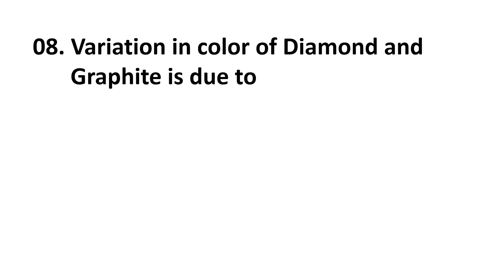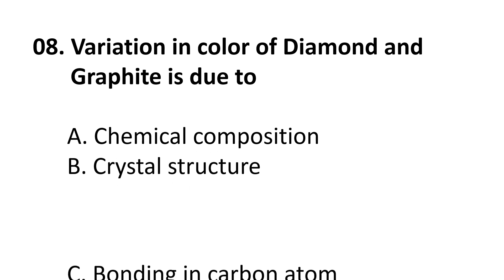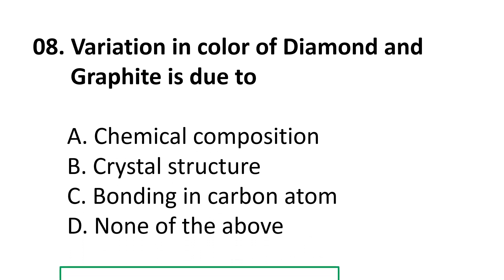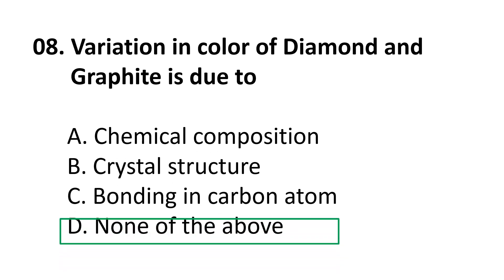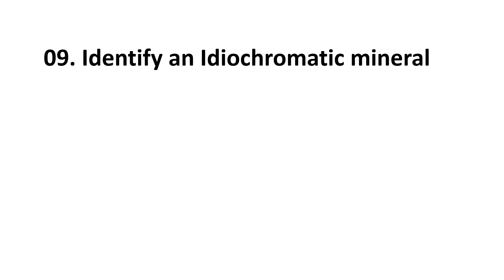Question 8: Variation in the color of diamond and graphite is due to — A. chemical composition, B. crystal structure, C. bonding in carbon atom, D. none of the above. The correct answer is C, bonding in the carbon atom.